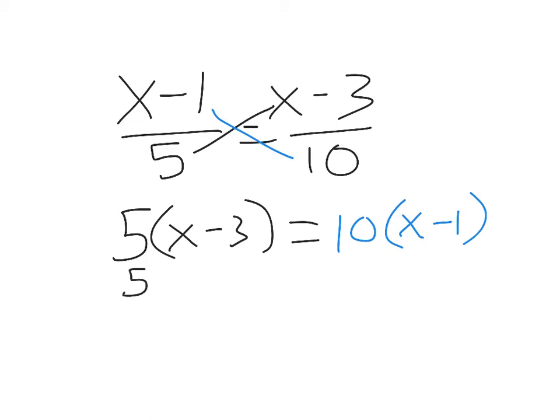Start by using the distributive property. So I have 5x minus 15 equals 10x minus 1. And then I just need to solve this equation, which has variables on both sides.